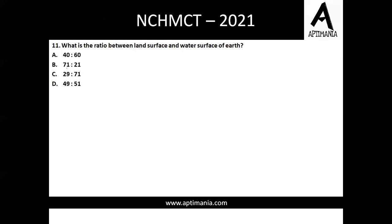Question number eleven: what is the ratio between land surface and water surface of the earth? The correct answer is 29 to 71 — we have 29% as land and 71% as water surface on the earth. Question number twelve: which Indian cricketer hit six sixes in one over in a T20 international match? The answer is Yuvraj Singh, option D.